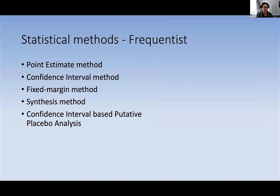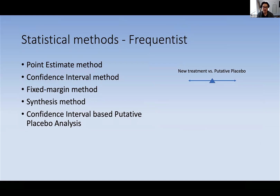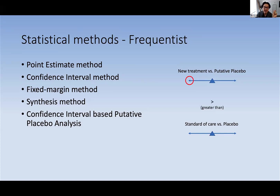The confidence interval-based putative placebo analysis demonstrates non-inferiority by first constructing a confidence interval of the new treatment compared to a putative placebo — meaning an indirect comparison, similar to how we conduct network meta-analyses. We're able to construct a confidence interval and make an indirect comparison between the new treatment and the putative placebo due to a common comparator, which is the standard of care. This confidence interval is then compared to a second confidence interval of standard of care versus placebo from historical placebo-controlled trials. Non-inferiority is demonstrated by taking the lower limit of the first confidence interval and showing it's greater than a preserved fraction of the upper limit of the other. This technique involves discounting twice in two different areas.